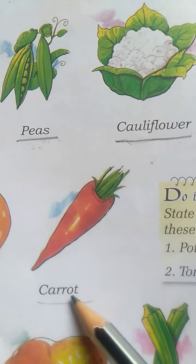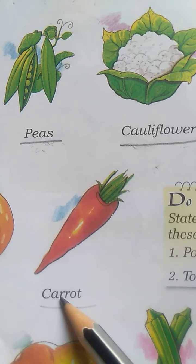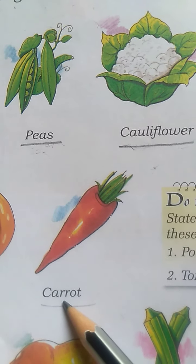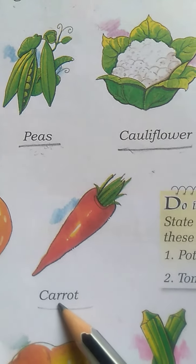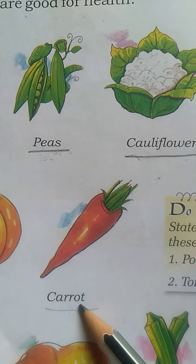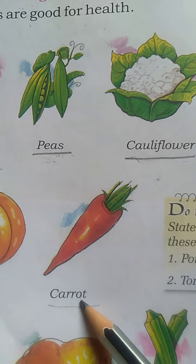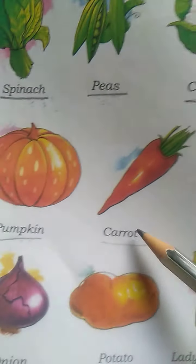Carrot. Carrot means gajur. What is the spelling of this word? The spelling is C-A-R-R-O-T. Carrot.